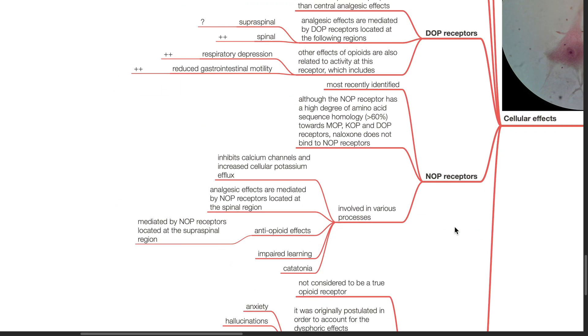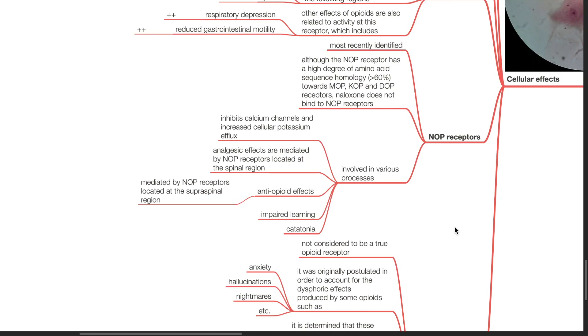NOP receptor is the most recently identified. Although the NOP receptor has a high degree of amino acid sequence homology, more than 60% towards MOP, KOP, and DOP receptors, naloxone does not bind to NOP receptors. NOP receptors are involved in various processes such as inhibition of calcium channels and increased cellular potassium efflux. Analgesic effects are mediated by NOP receptors located in the spinal region. Anti-opioid effects mediated by NOP receptors located at supraspinal regions, impairing of learning and catatonia.